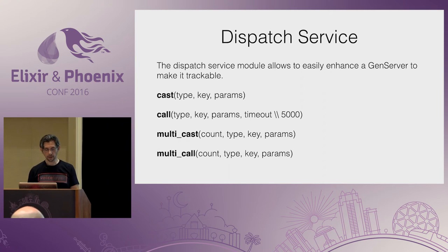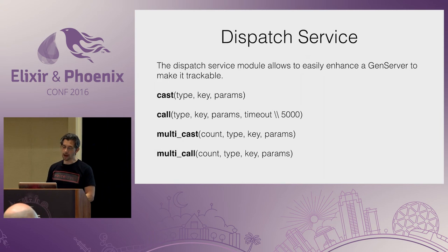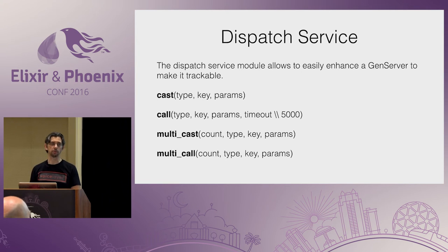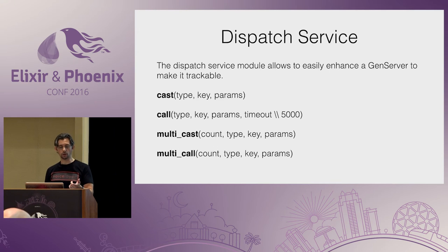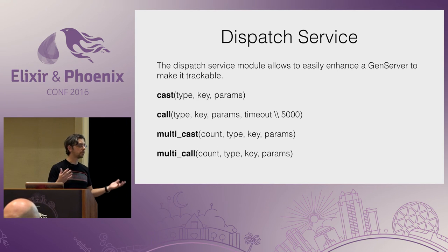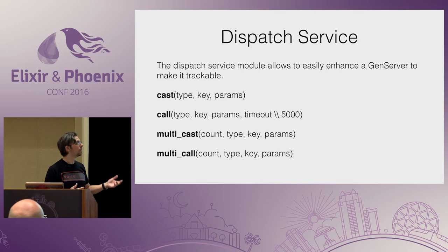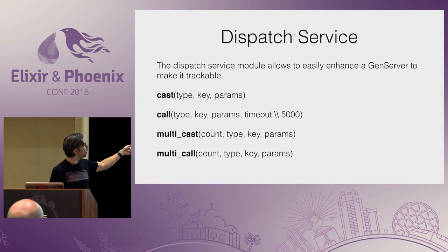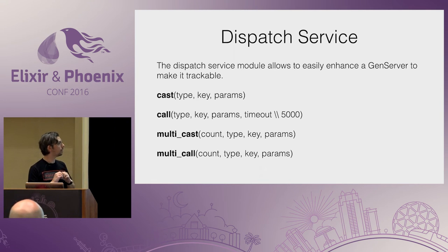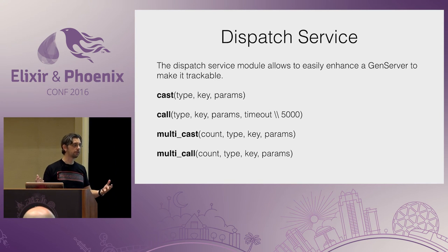Dispatch Service is another module that allows you to enhance a gen server and make it trackable — a convenient module. You can use cast and call, similar to gen server cast and call. What's cool is you can build a gen server and then converting it into a system that handles high availability or partition tolerance is very easy — all you need to do is change gen_server cast and call into dispatch_service cast and call. We also provide additional functions like multicast and multicall, where you send the request to more than one node — hopefully all the nodes on your preference list — and multicall collects all results and hands them back. You can also specify a timeout.